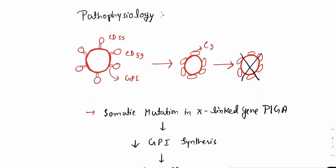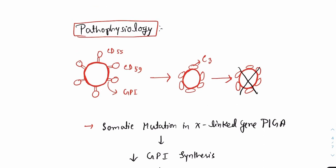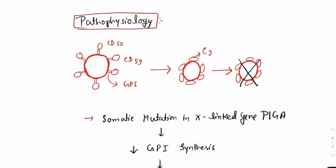If we look at the pathophysiology of PNH, it is quite interesting. Normally, suppose this is an RBC, there are certain membrane proteins like CD55 and CD59 which are anchored to the RBC surface membrane with the help of an anchored protein known as GPI. Because of the presence of CD55 and CD59 on the surface of RBC, these RBCs are quite resistant to destruction by the complement system.